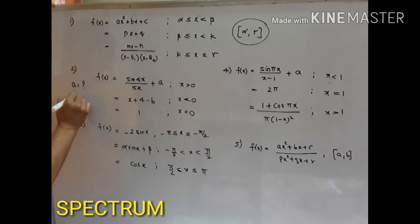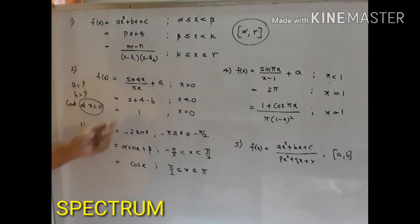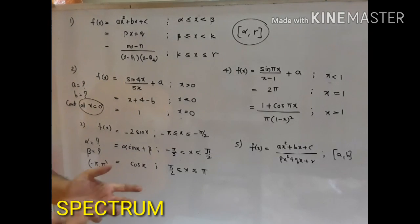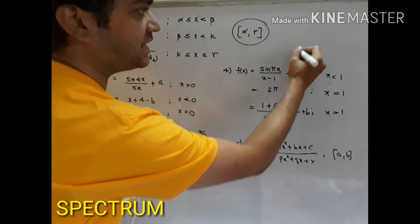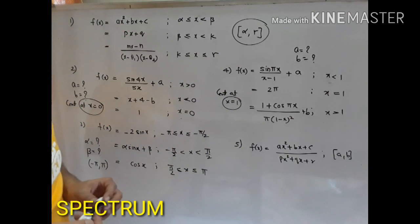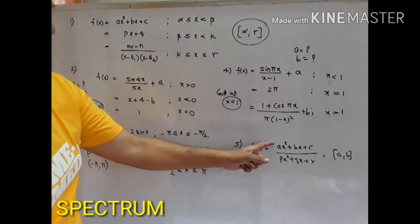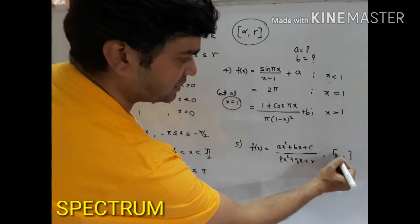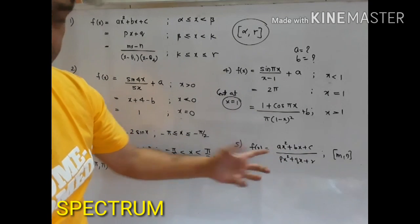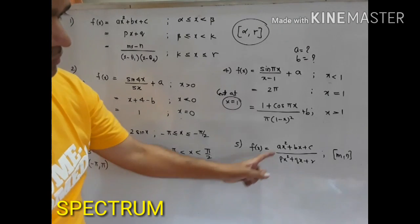Look at this question: they say find the value of a and b when this particular function is continuous at x equal to 0. Similarly, here they ask you to find the values of alpha and beta when the given function is continuous from minus pi to pi. Here they ask us to find the value of a and b given the function is continuous at x equal to 1. There is also an important type where you get a polynomial divided by a polynomial and they ask you to discuss continuity in the domain.